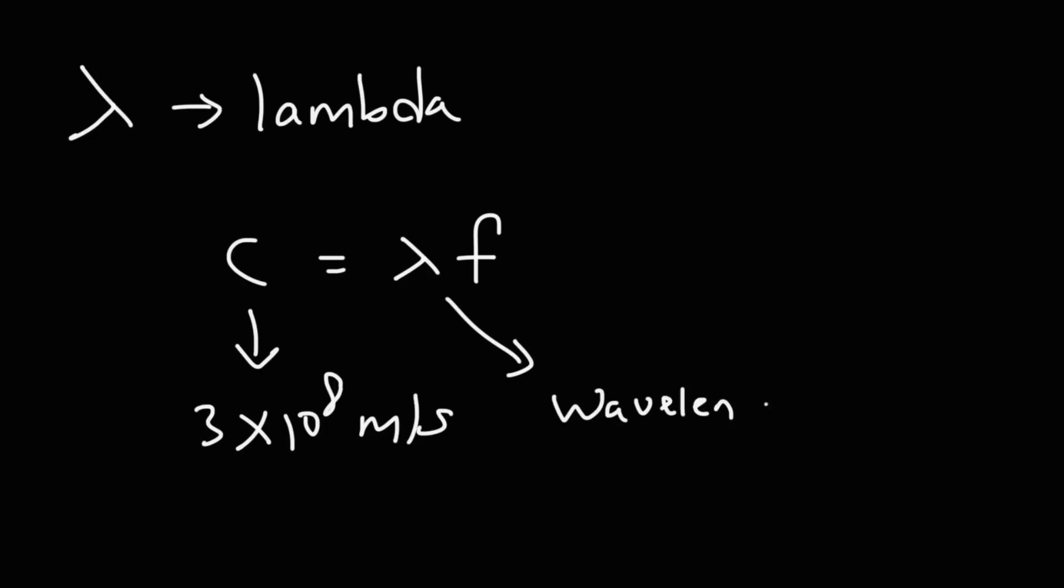This symbol is the Greek alphabet lambda. And you might encounter this in chemistry or physics, when you're talking about electromagnetic radiation, especially light. For instance, the speed of light is equal to the wavelength times the frequency. C is the speed of light, which is 3 times 10 to the 8 meters per second. Lambda represents the wavelength measured in meters. And f is the frequency measured in hertz, or 1 over seconds. So that's where lambda comes into play. Typically, you'll see it represented as the wavelength of light or some form of electromagnetic radiation.